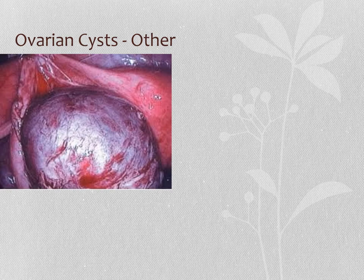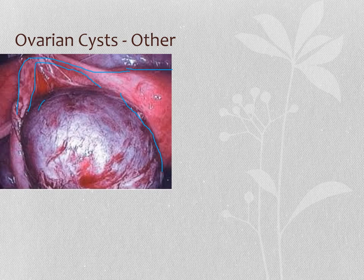So here is the uterus, and this is a fallopian tube coming off of the uterus. What we're seeing here — this huge thing — is a huge blood-filled cyst called an endometrioma. This is someone who has the condition called endometriosis, which we're going to talk about in depth later in this lecture. They basically have a huge blood-filled cyst on their ovary. This is an endometrioma — a blood-filled cyst.